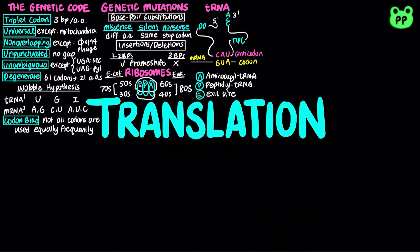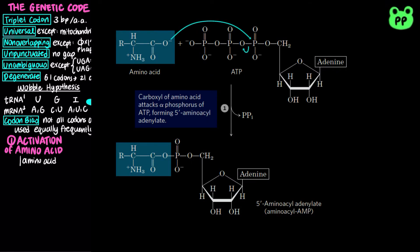Translation involves four main stages. The first stage involves activation of amino acids, in which amino acids are attached to the 3' hydroxyl group of the 3' terminal A residue of tRNA through an ester linkage by the enzyme aminoacyl tRNA synthetase. First, the carboxyl group of the amino acid attacks the alpha phosphate group of ATP, releasing pyrophosphate and forming 5' aminoacyl AMP.